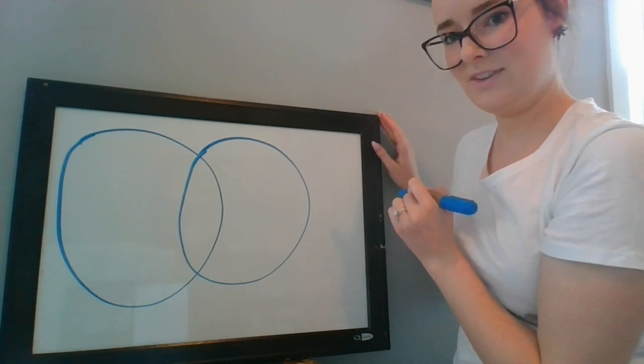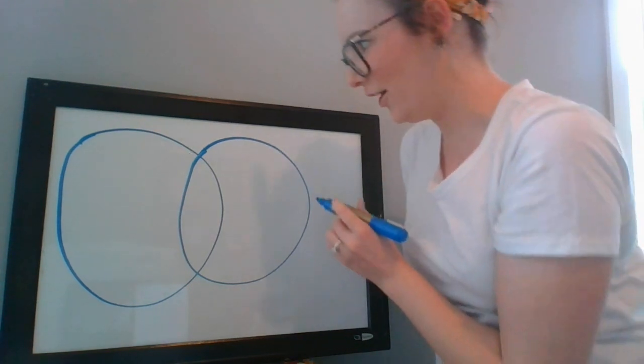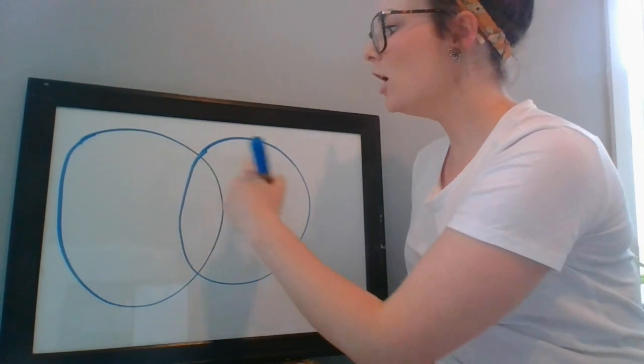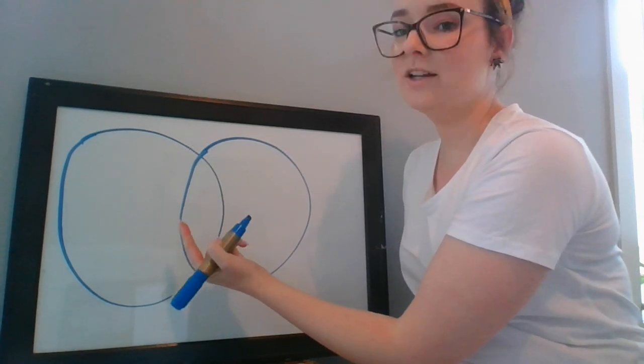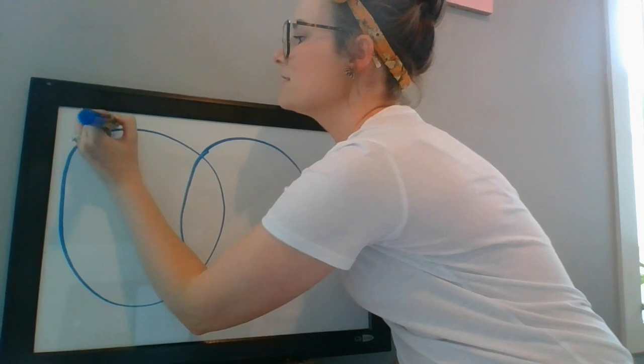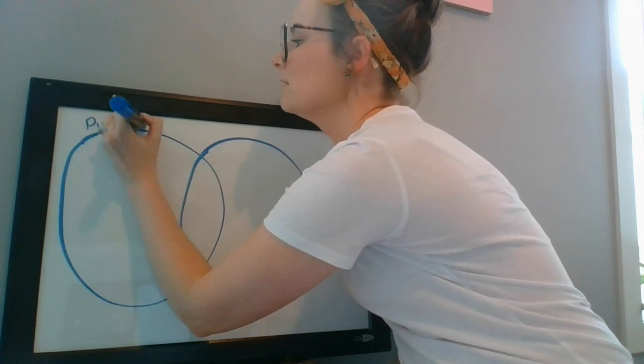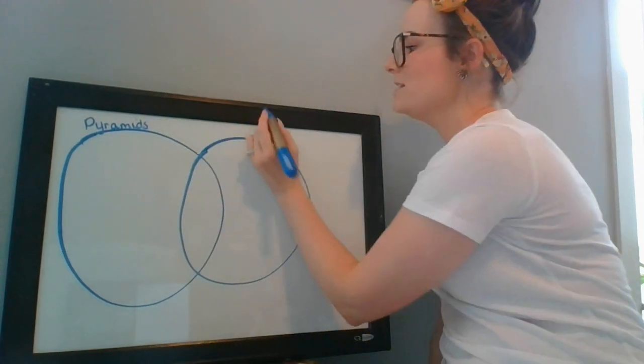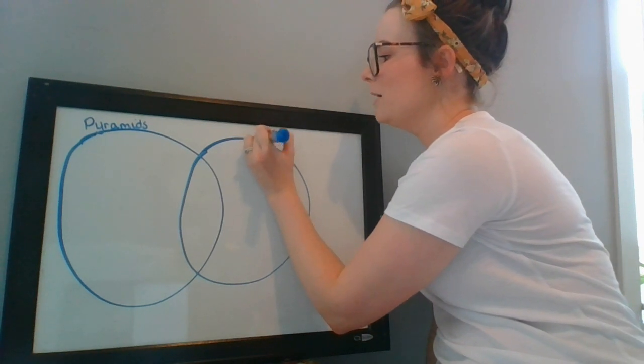Can you see that one? Not exactly the best circles but I tried. At the top of each of my circles I'm going to give it a heading. So this one on this side is going to be pyramids and this one, you guessed it, is going to be for my prisms.